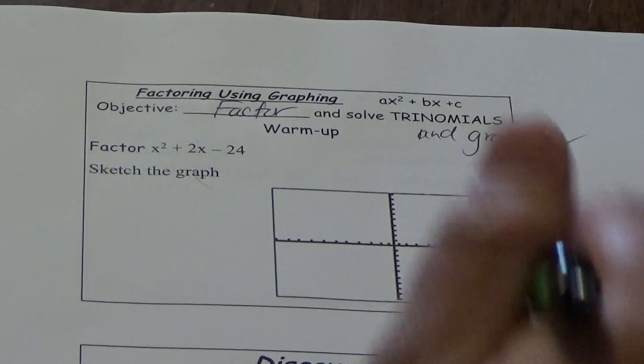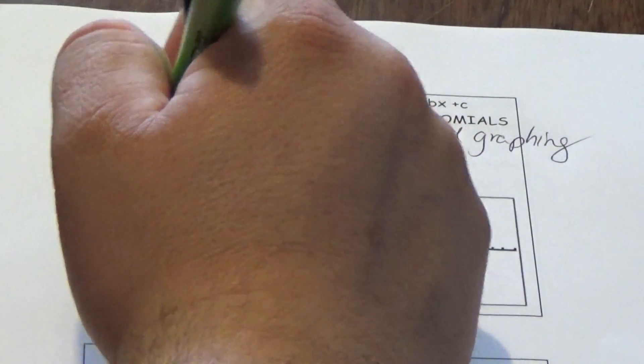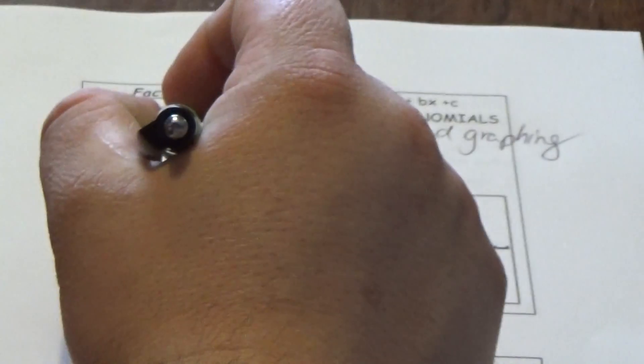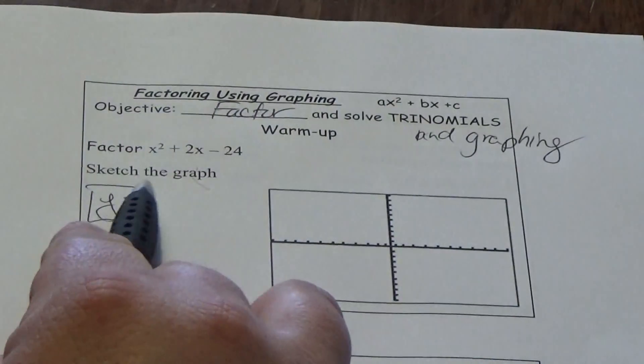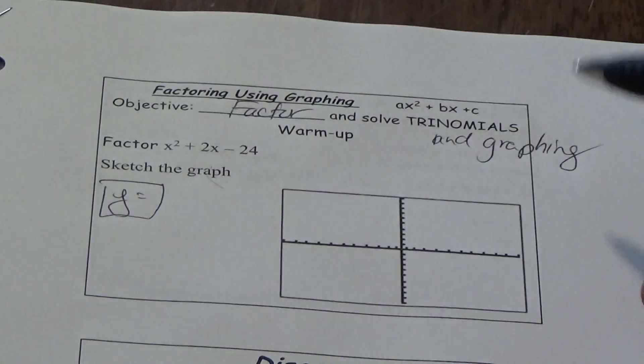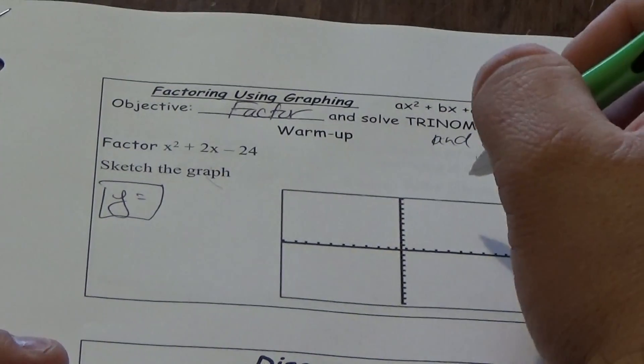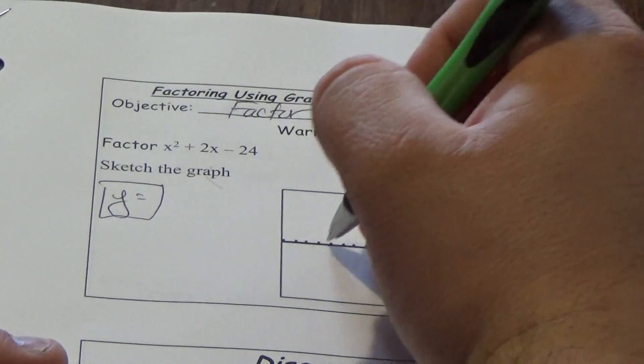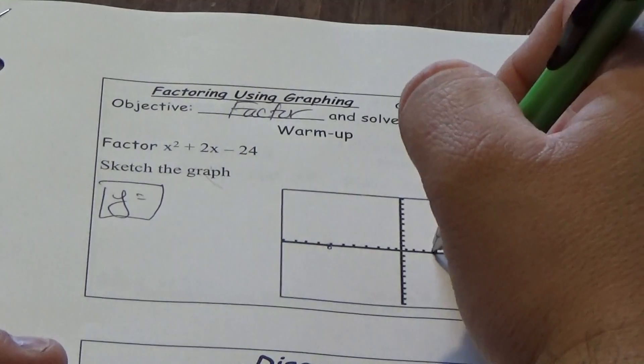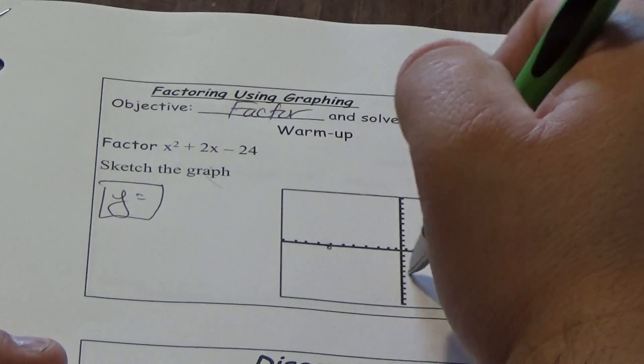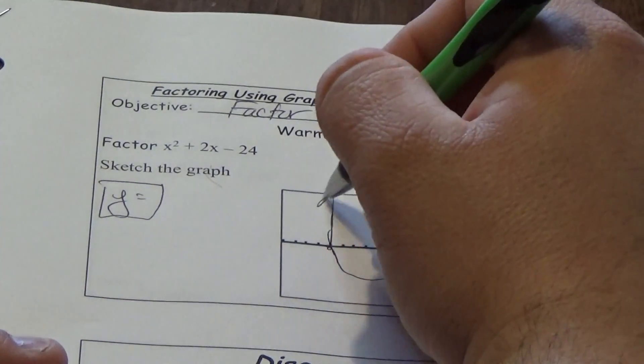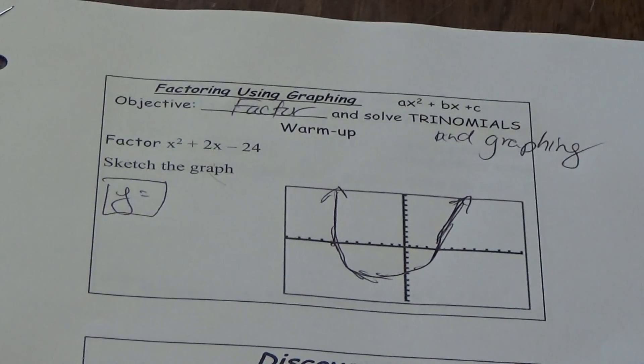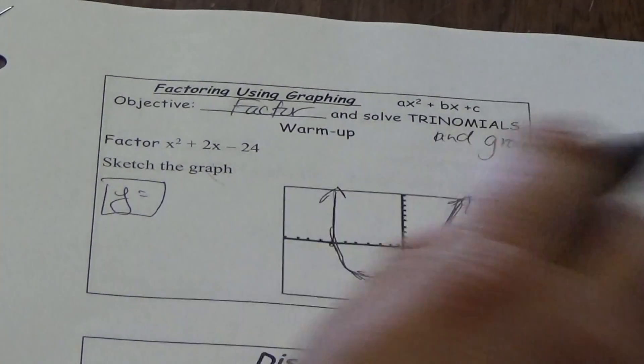If you go in your calculator to the y equals, you can go to y1 and type in x squared plus x minus 24. When you hit graph you should get a graph that looks like this—roughly U-shaped. It might not look exactly like this, but you get my point.